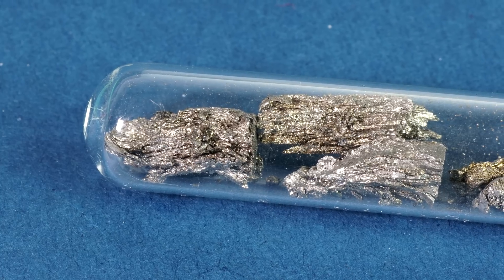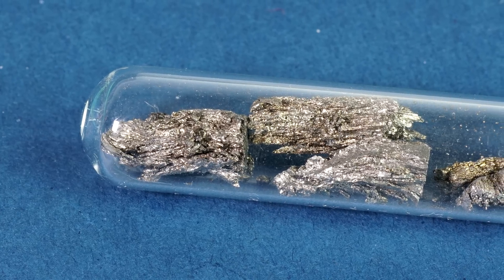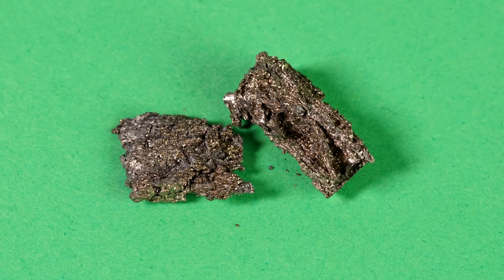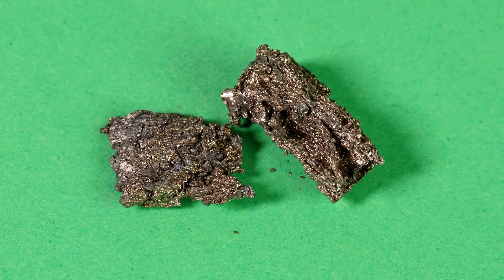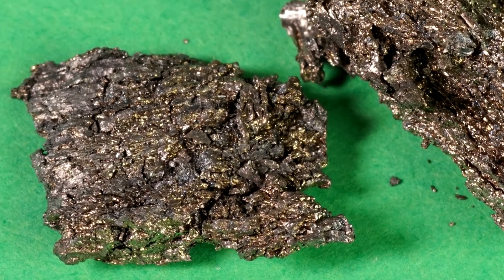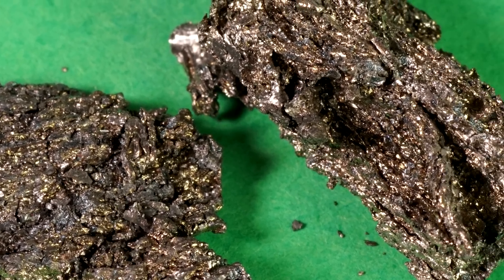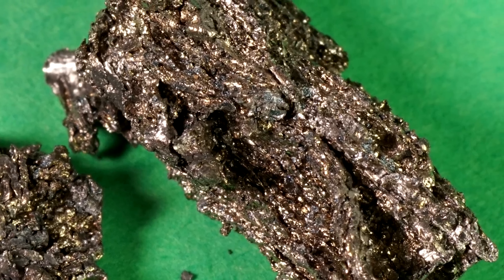In appearance, metal samarium looks shiny with a yellowish tinge due to formation of samarium monoxide on air. Also, pieces of samarium have an extremely pronounced crystalline structure, which is also called metal dendrites.